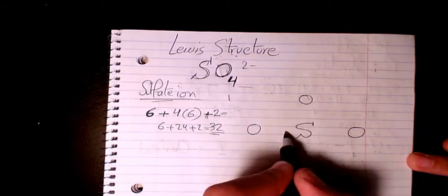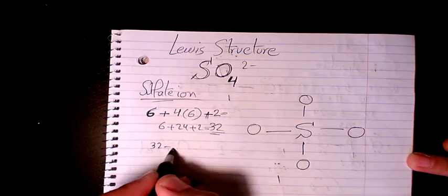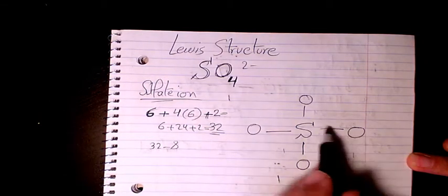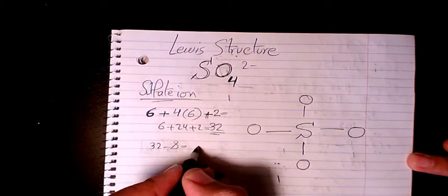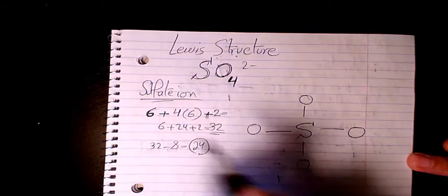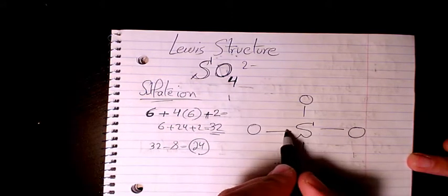So we have a single bond to each of these oxygens. 32 minus 8, why 8? Because we have four bonds times 2 equals 8. 32 minus 8 is gonna make it 24. So then we can have two more double bonds.